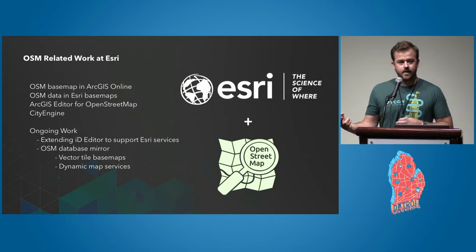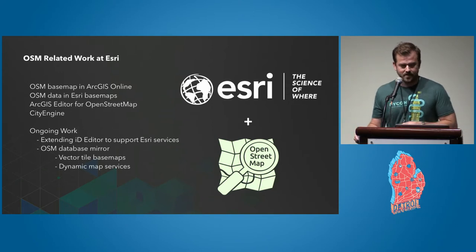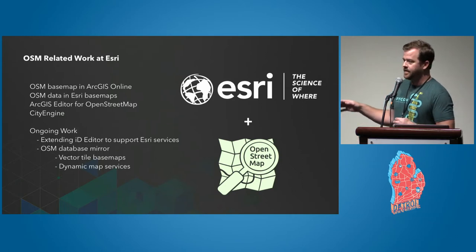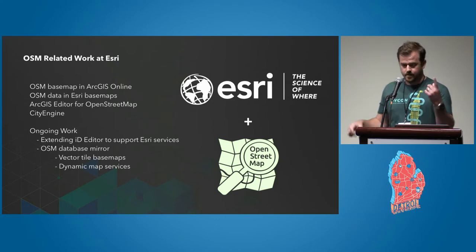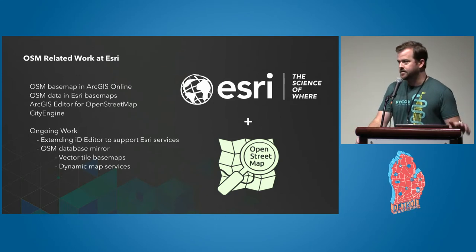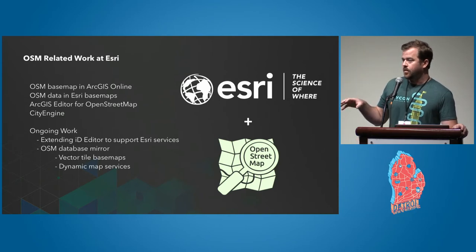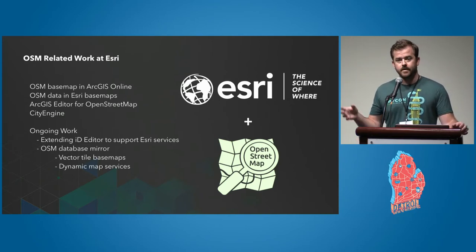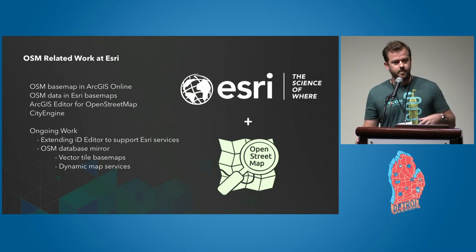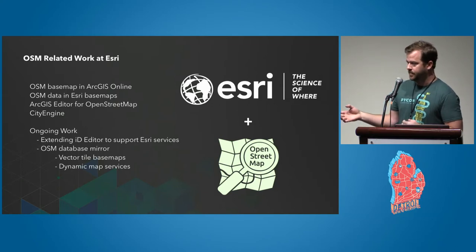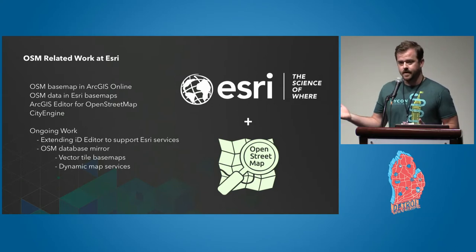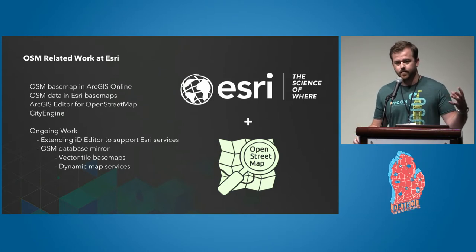Two things have come out of that mirror. The first is a vector tile basemap we created from that same database. We've mimicked the core OSM basemap style for now, but we have an interactive style editor. The plan is to make multiple styles of our own and put that basemap with the style editor out to the public so you can make your own custom style — basically take the OSM basemap and restyle it in a web browser.